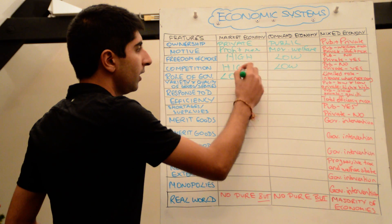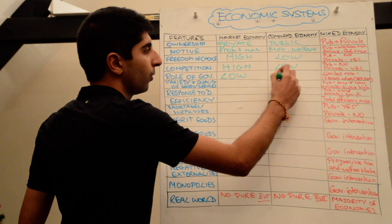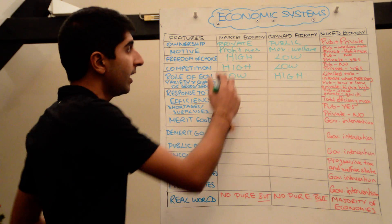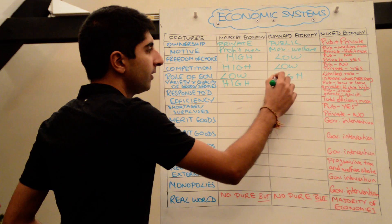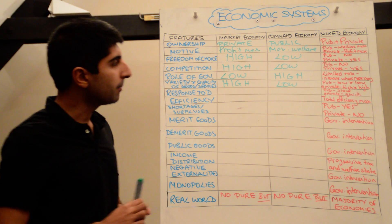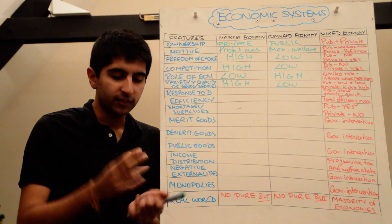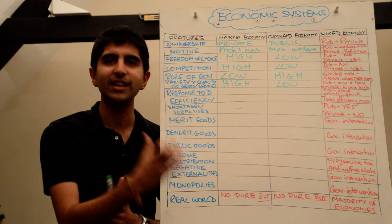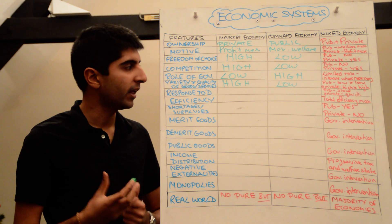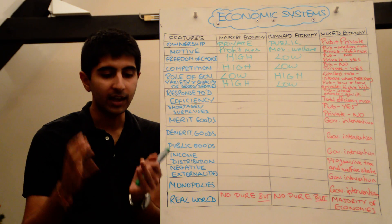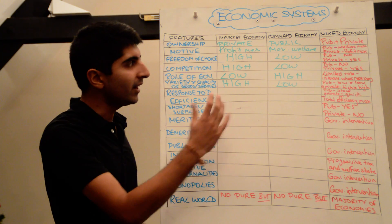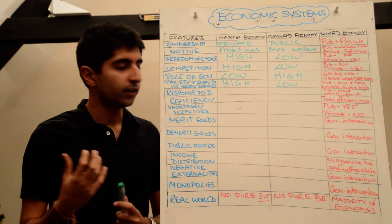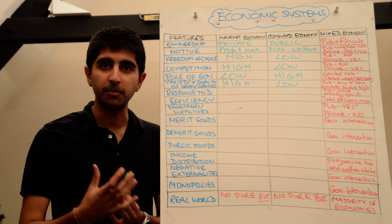The role of government is low or very limited in market economies and, of course, very high in command economies. The variety and quality of goods and services in market economies will be high and relatively low in command economies. In market economies, the incentive to maximise profits means producing goods and services that consumers want and need at high quality, providing variety and ensuring quality is high. That incentive does not exist in command economies — governments don't have the same motives as private sector firms — so quality and variety may suffer.